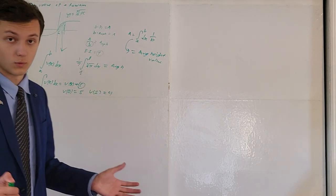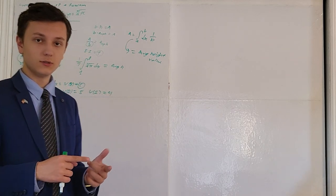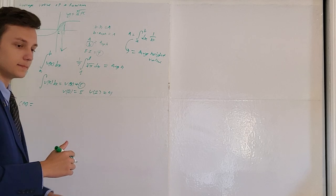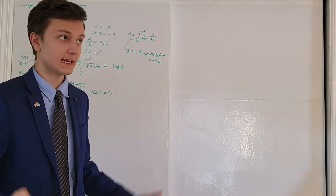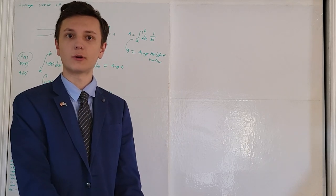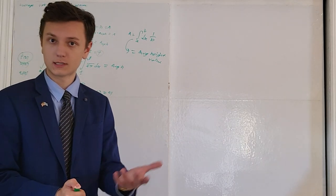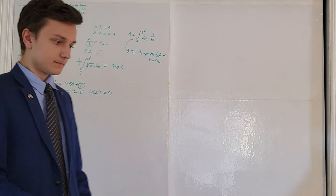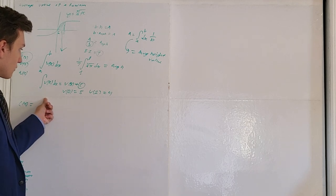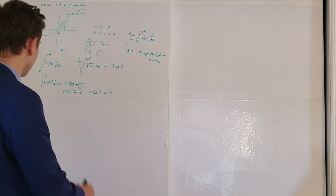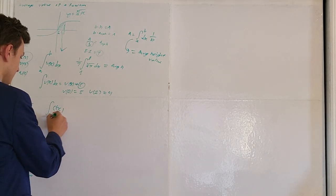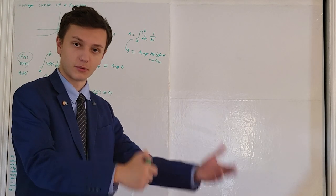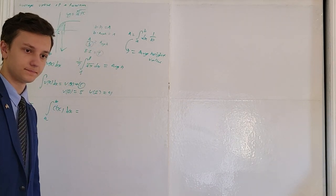That goes for any rate function, not just velocity. On my AP exam, we were given a function c(x) representing the rate at which cars entered a parking lot — a rate of change, conceptually the same as a velocity function. So if c(x) is the rate at which cars enter a parking lot, the definite integral of c(x) from time a to time b dx is the total number of cars that enter from time a to time b.